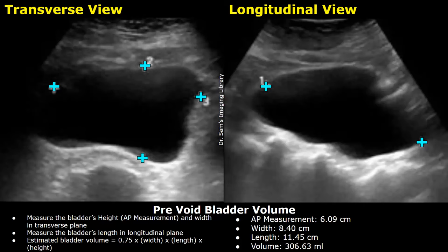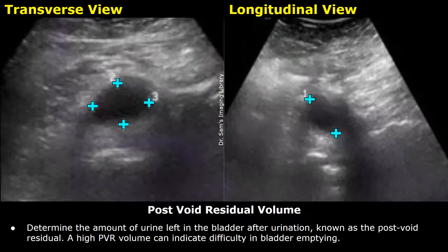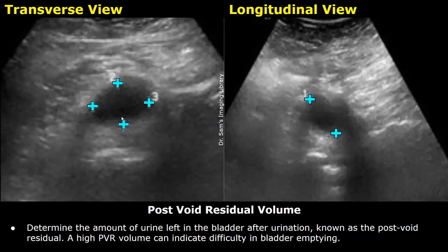After the pre-void volume has been measured, the patient is asked to urinate to empty the bladder. After urination, the bladder volume is measured again to determine the amount of urine left in the bladder. This is the post-void residual, or PVR. If a high PVR volume is found, it can indicate difficulty in bladder emptying.